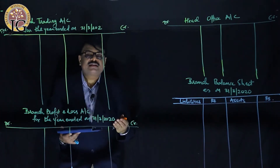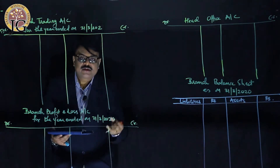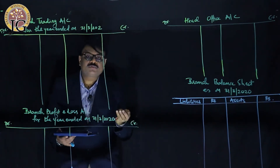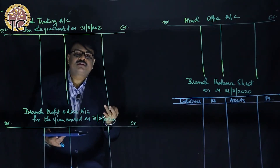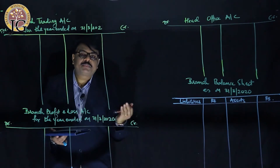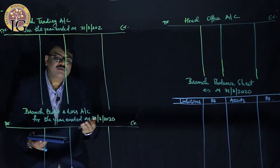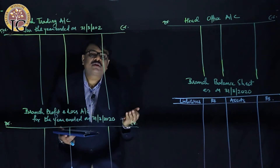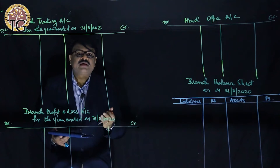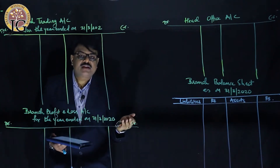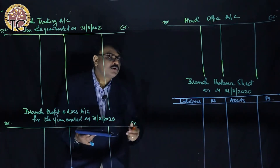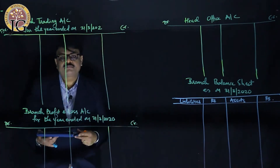An independent branch prepares a trading account, a profit and loss account, a head office account, and a balance sheet. The trading account and profit and loss account are just like those a sole trader would prepare. The head office account is equivalent to a capital account — in case of an independent branch, head office account is a capital account.